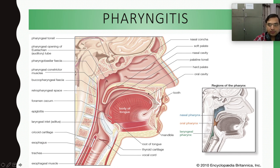Here you can see the quick anatomy. The oral cavity leads into the pharynx. This is the epiglottis, this is the nasal cavity, this is the soft palate, and this is the hard palate. The hard palate is followed by the soft palate, and then the epiglottis covers the trachea. Behind the trachea is the esophagus.